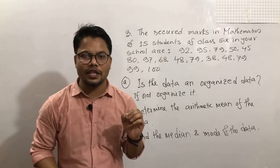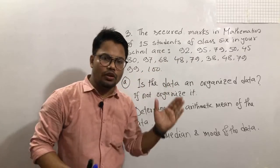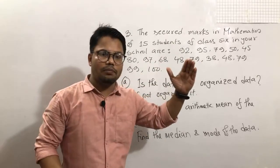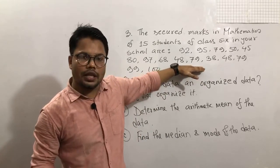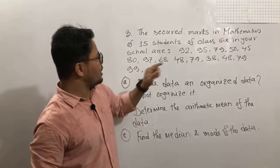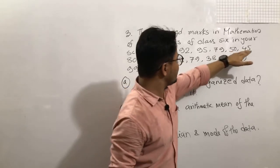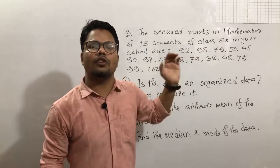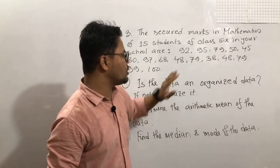When you see given data from the smallest number to the largest number, this is called ascending order. When you see from the largest number to the smallest number gradually, we call this descending order. But here, 92, 95 increasing, then again 70, 79 decreasing — there is no arrangement in ascending or descending order. Definitely, this data is not in organized order.